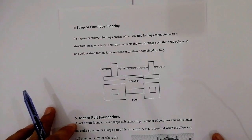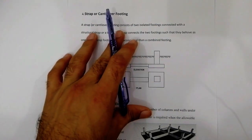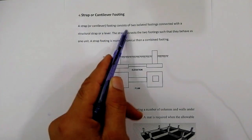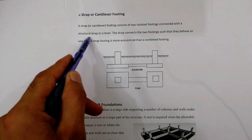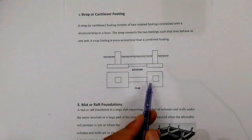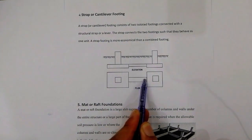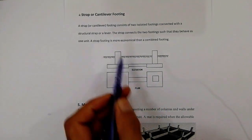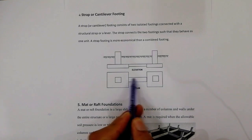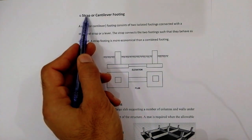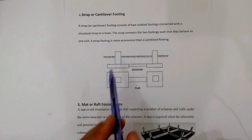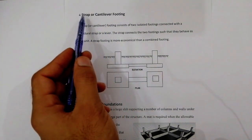The fourth type is strap or cantilever footing. A strap or cantilever footing consists of two isolated footings connected with a structural strap or lever. You can see in the diagram — two columns with a strip connecting the two footings so they behave as one unit. Strap footing is more economical than a combined footing.